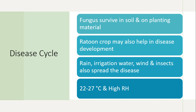Regarding the disease cycle, the fungus survives in soil, on planting material, in crop debris, and on the ratoon crop, which may also help in disease development. Rain, irrigation water, wind, and insects spread the disease. A temperature of 22 to 27 degrees centigrade with high relative humidity are important abiotic factors responsible for the spread of this disease.